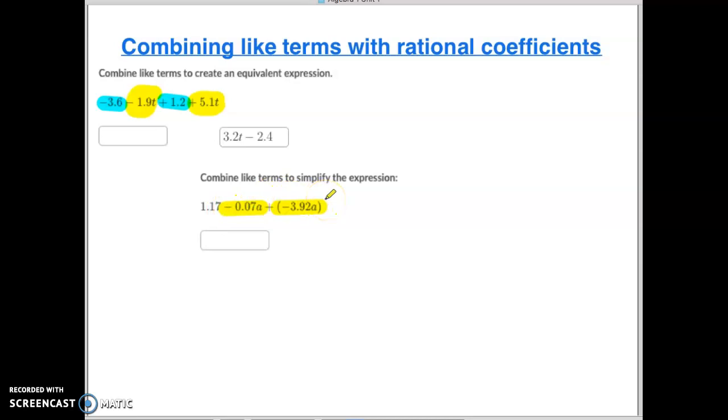I only have one constant, so nothing to add together there. The answer is negative 3.99a plus 1.17. All right, let's do one more here. Now we've got some fractions with some distribution to do.